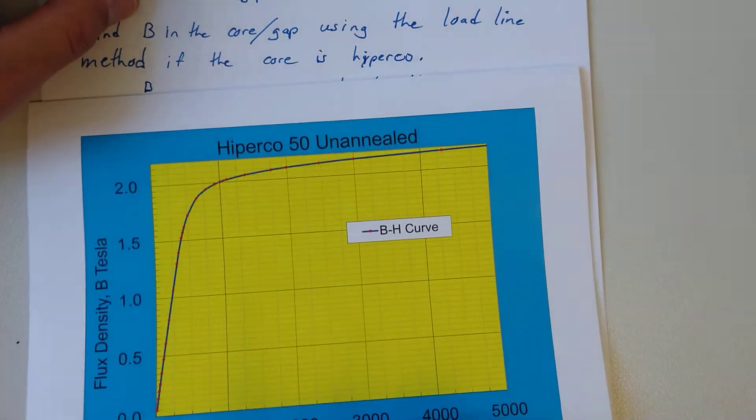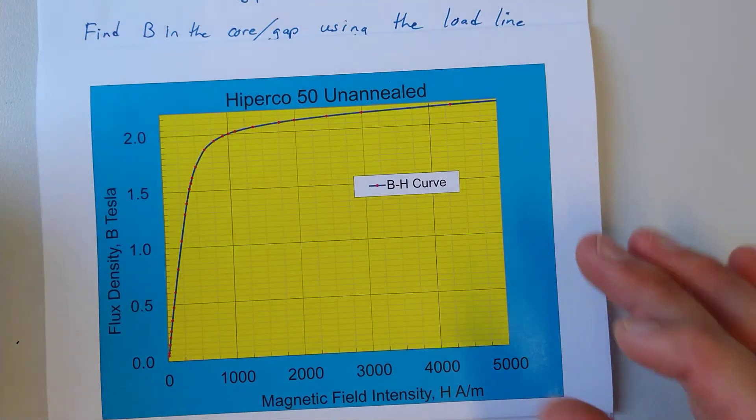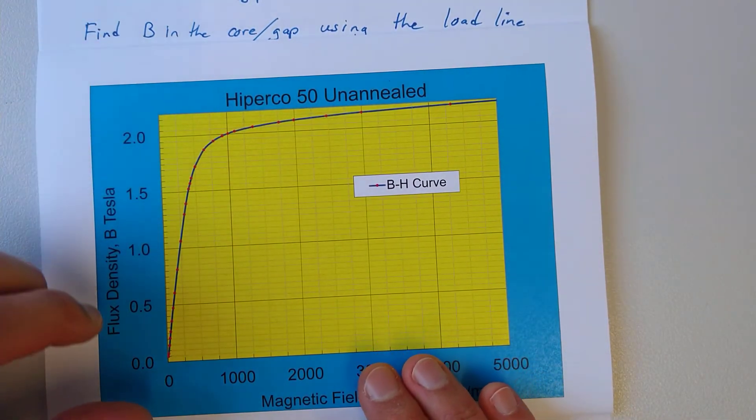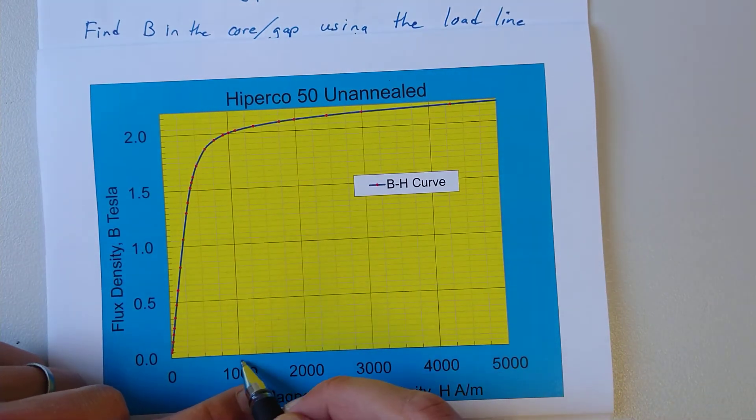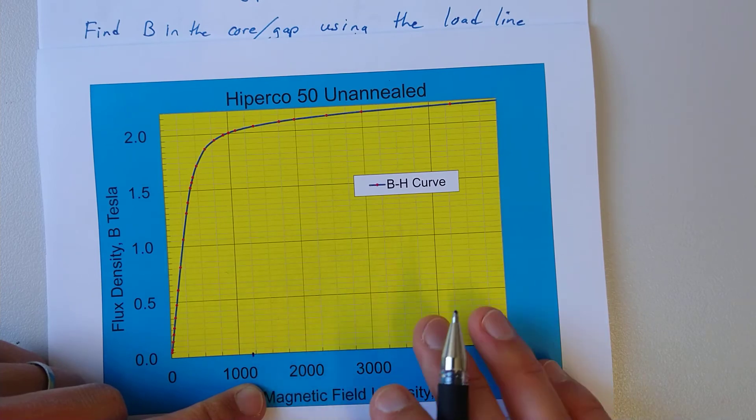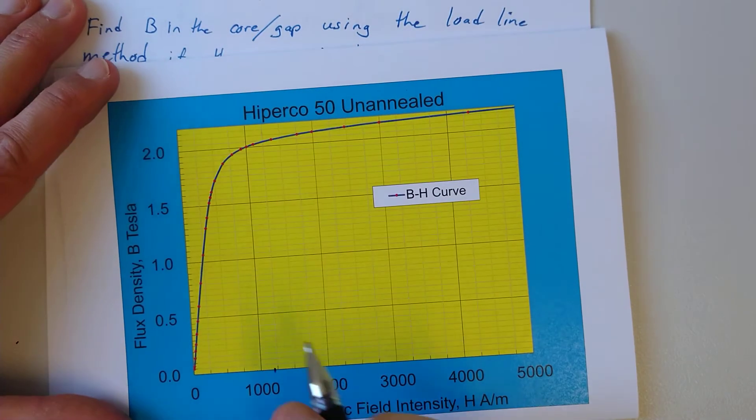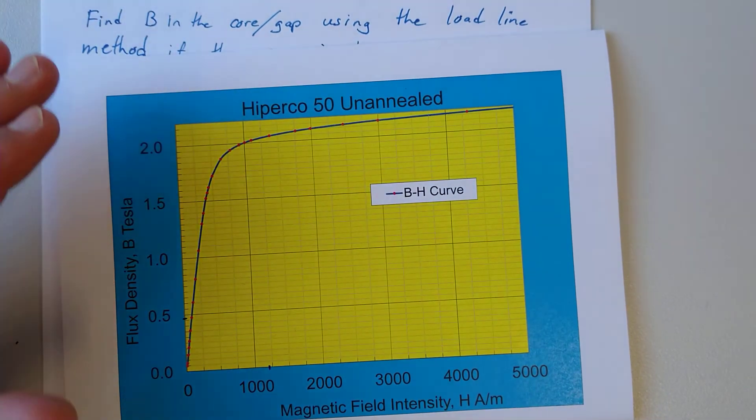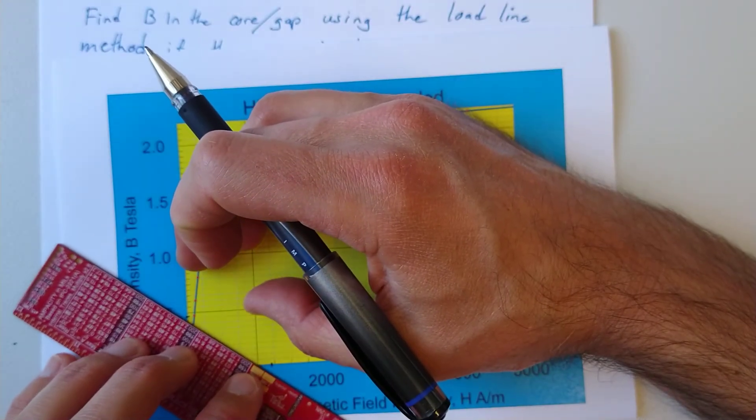So we simply go to our curve, our BH curve, and put these values on. 1,200... 1,000... 1,250... so it's going to be just in front of this one. The y-intercept is 0.48, approximately there. Take a straight edge.